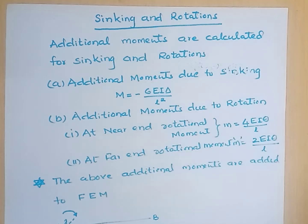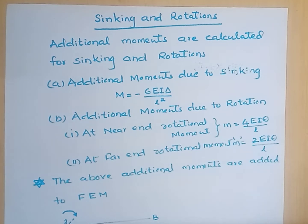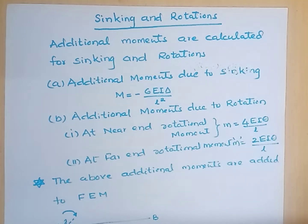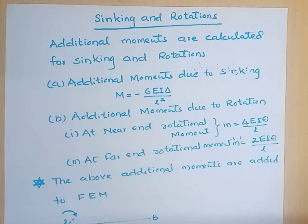The additional moment due to rotation for the near end is: M equals 4EI theta by L, where EI is the flexural rigidity, theta is the rotation, and L is the length of that span, delta is the sinking of the support. For the far end, the additional rotational moment equals 2EI theta by L.